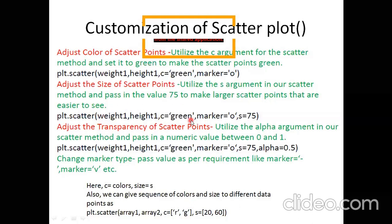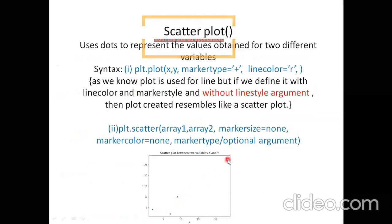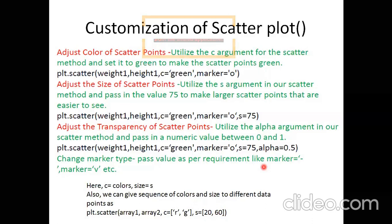You can also change the size of scatter points using the size argument. If you pass only one size, all dots will be the same size; if you pass a list of sizes like 20, 60, etc., each dot gets a different size. Additionally, you can adjust the transparency of scatter points using the alpha argument — alpha=0.5, for example. Alpha lies between 0 and 1; changing it adjusts the transparency of the scatter points.